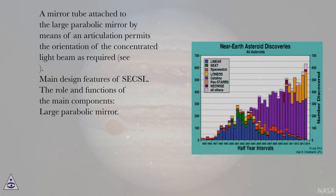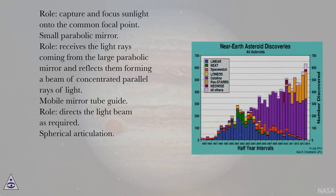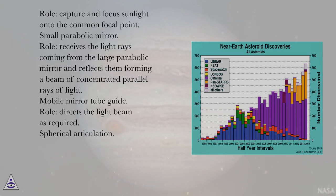The reflectivity of a mirror is given by reflective foils or plates which are stretched on a lightweight parabolic support. A mirror tube attached to the large parabolic mirror by means of an articulation permits the orientation of the concentrated light beam as required. The main design features and component roles: Large Parabolic Mirror — captures and focuses sunlight onto the common focal point. Small Parabolic Mirror — receives the light rays from the large parabolic mirror and reflects them forming a beam of concentrated parallel rays of light. Mobile Mirror Tube Guide — directs the light beam as required.